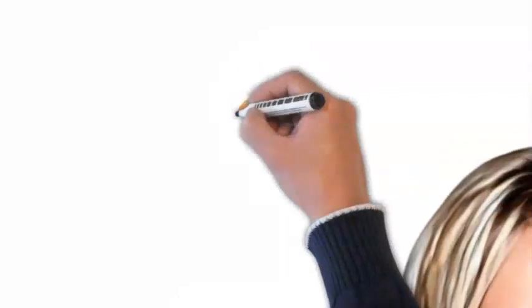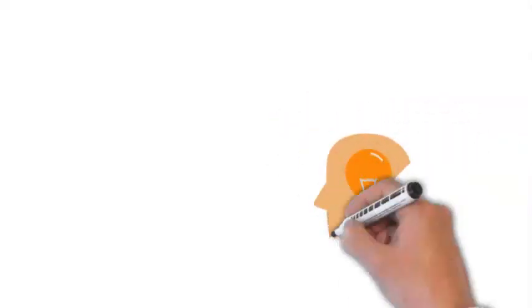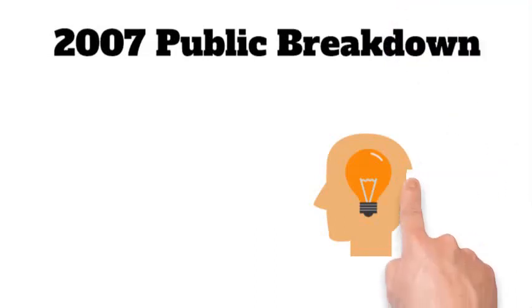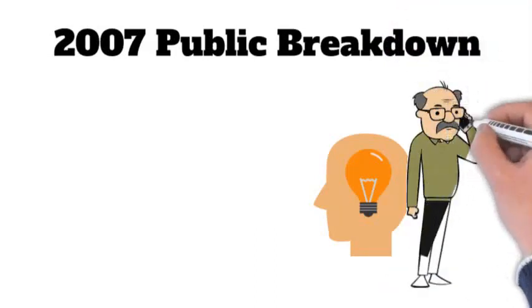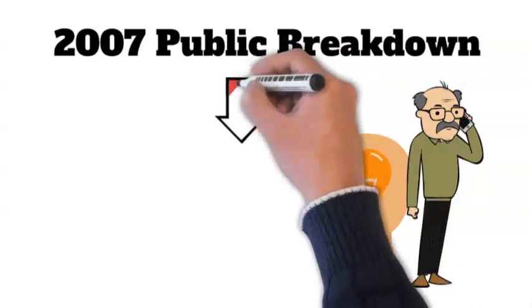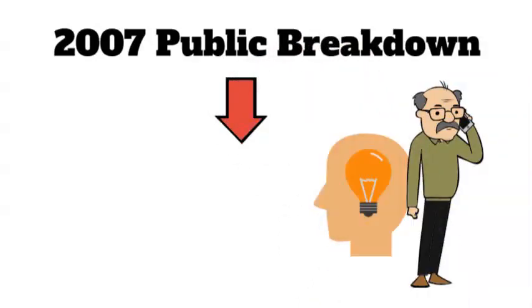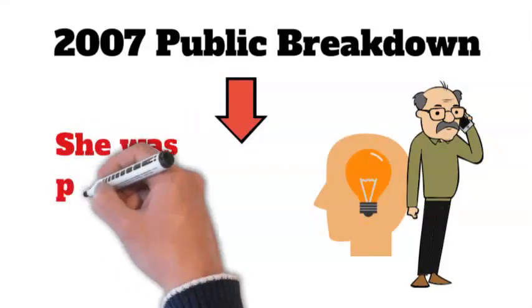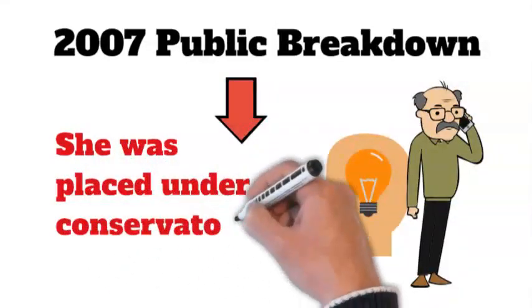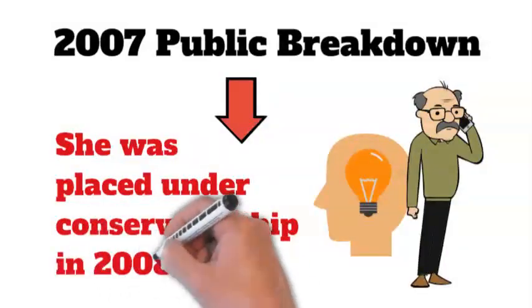Her battles with addictions have constantly been covered by the press as she grew up in the public spotlight. She could not make decisions independently without the help of her conservators as a result of her 2007 public breakdown, which prompted the court to appoint her father as a co-conservator. Because of the mental health problems she was experiencing, she was placed under conservatorship in 2008.